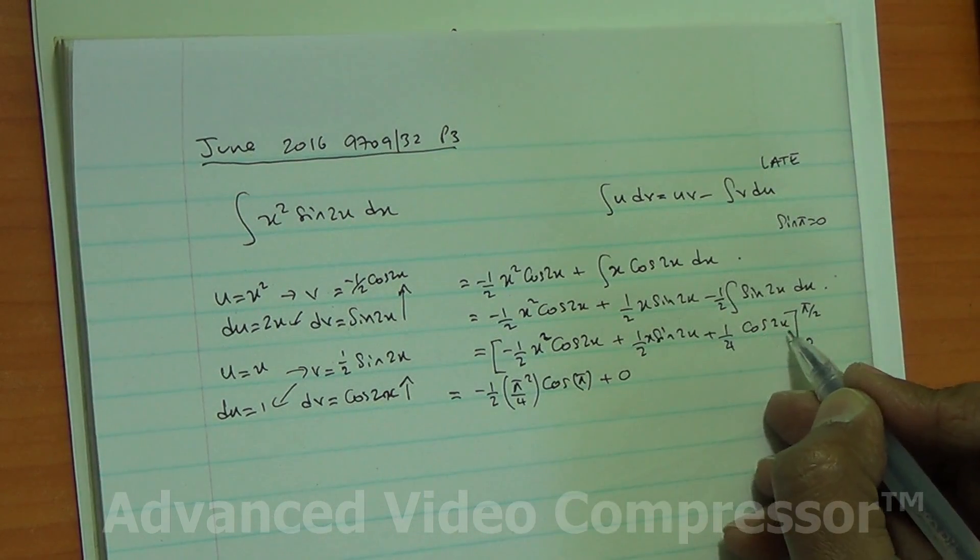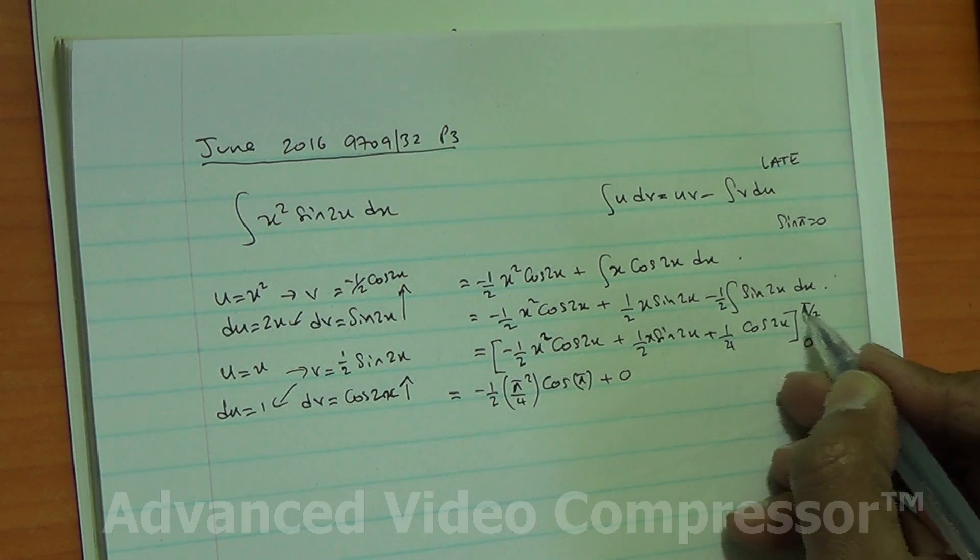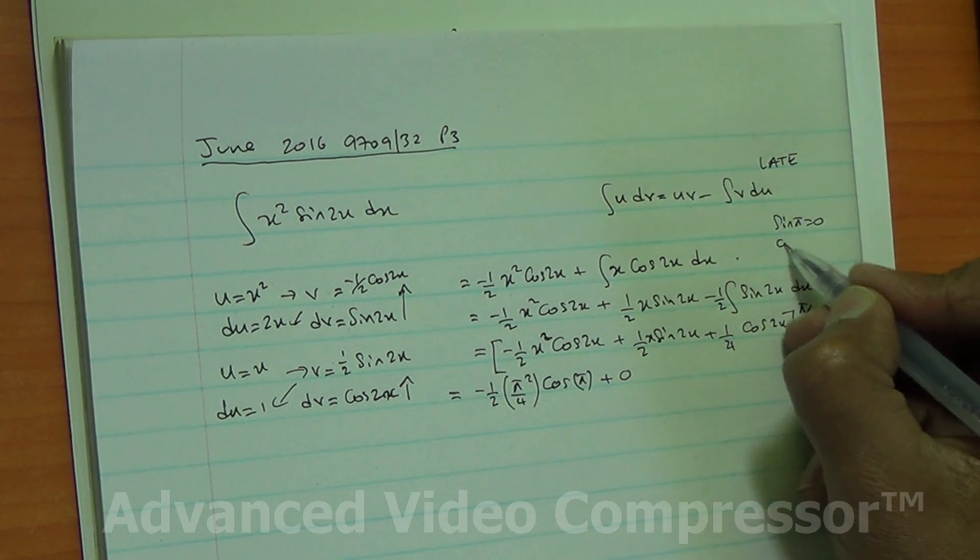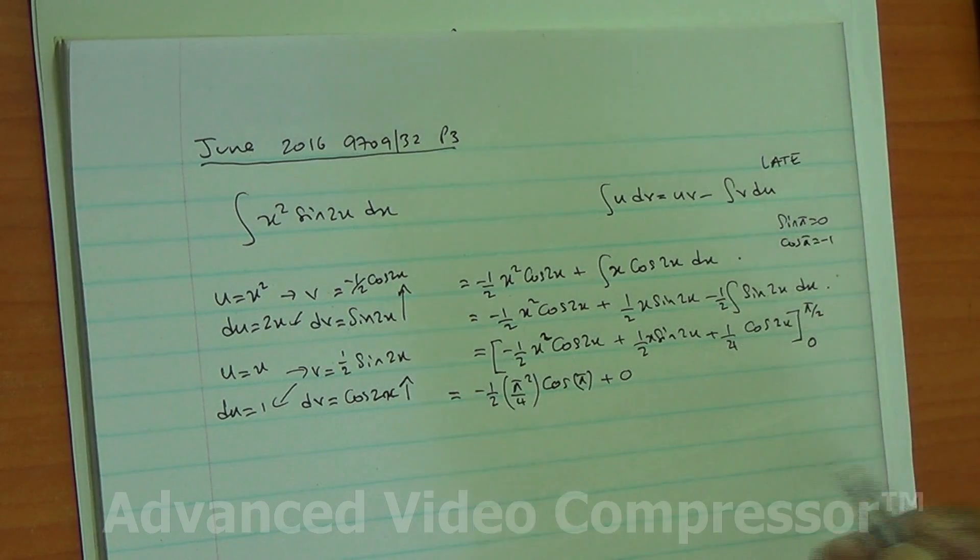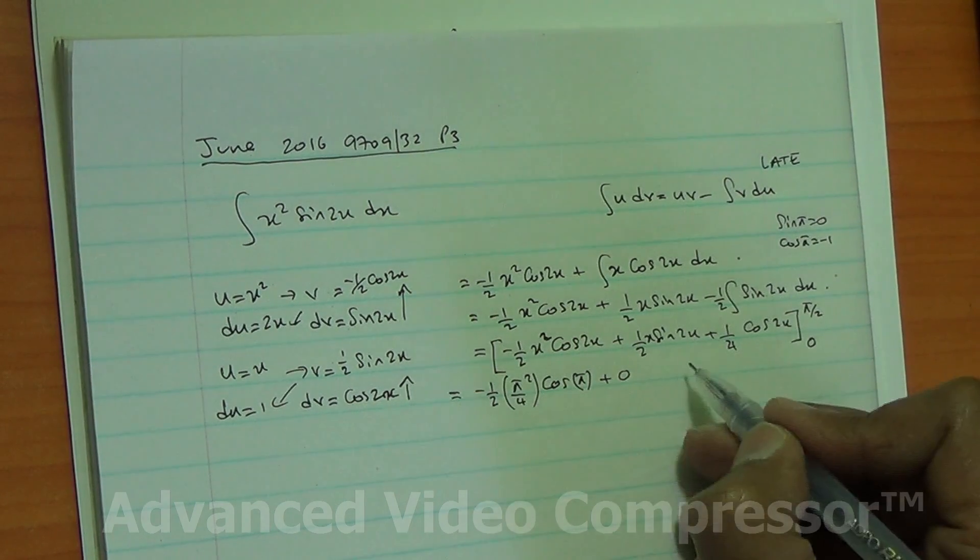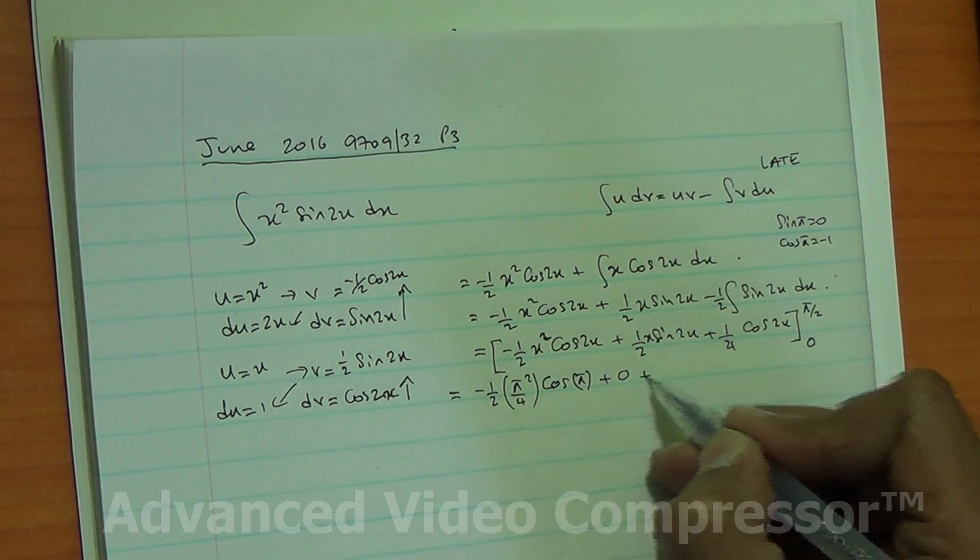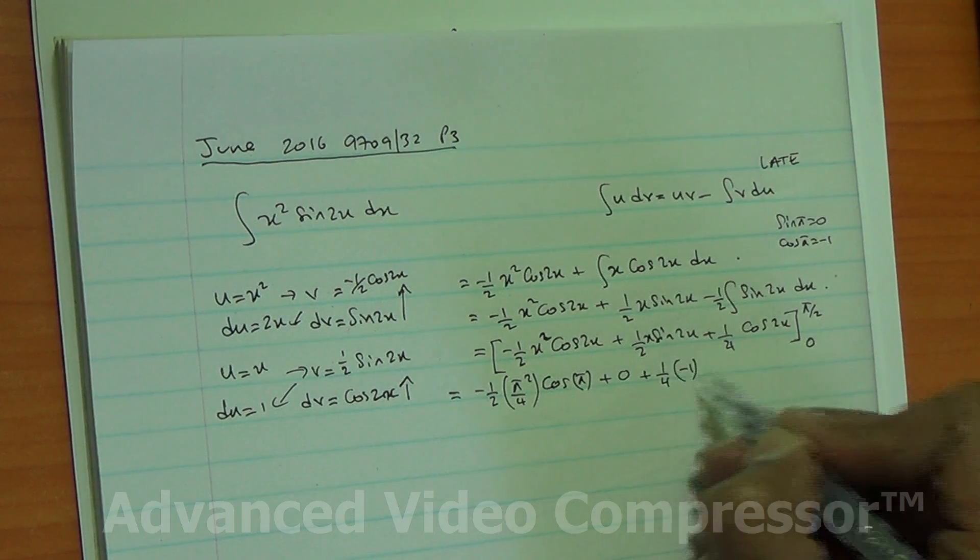Then 1 quarter times cos of 2x. 2x is 2 times pi upon 2, which is pi. What is cos of pi? Cos of pi is negative 1. So I have plus 1 quarter times negative 1.